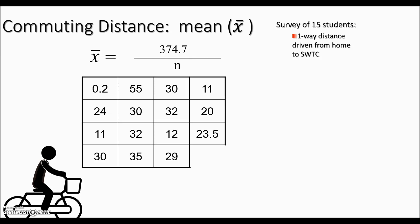So our sum is 374.7, there are 15 students and when you divide, we end up with a mean of 25 miles.